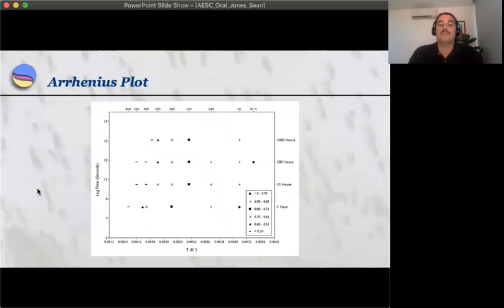Once we've got these results, we can then put them in an Arrhenius plot of log time versus inverse absolute temperature. On the bottom x-axis we have temperature in Kelvins, on the top x-axis we have the corresponding temperatures in degrees Celsius, and then on the y-axis we have log time.